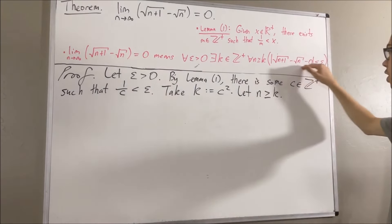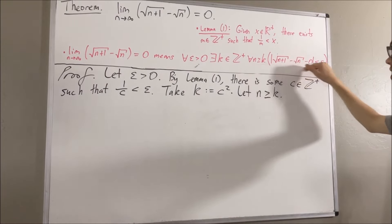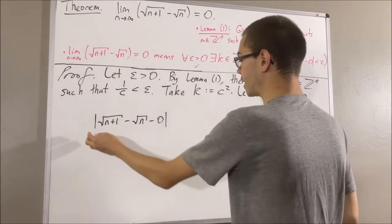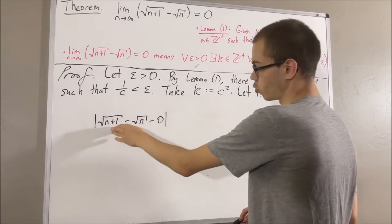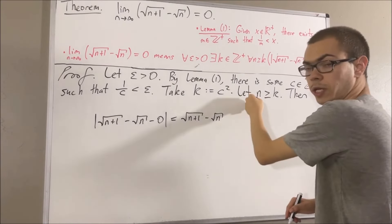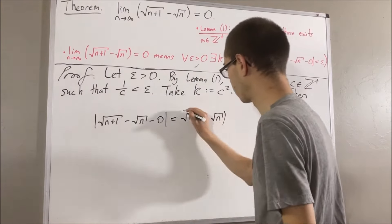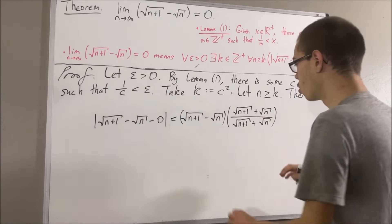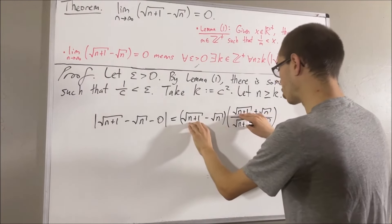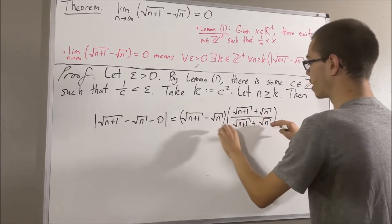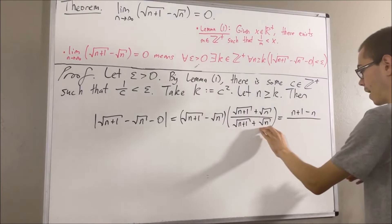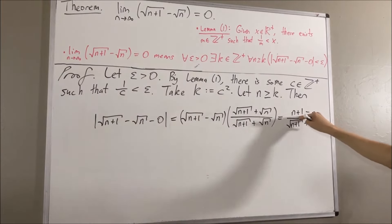From here, we want to show that this inequality is true. We're basically going to do exactly what we did in our scratch work. We know that the absolute value of this expression is just equal to square root of n plus 1 minus square root of n. Then we took this and multiplied it by a fraction where both the numerator and denominator contained its conjugate. We're doing this expression times this expression, which results in square root of n plus 1 squared minus square root of n squared. So in the numerator that leaves us with n plus 1 minus n, and in the denominator we have precisely what we have here. n minus n leaves us with just a 1 in the numerator.